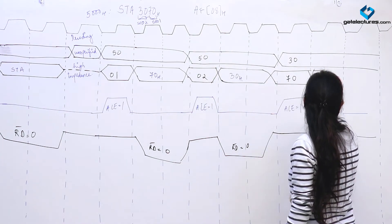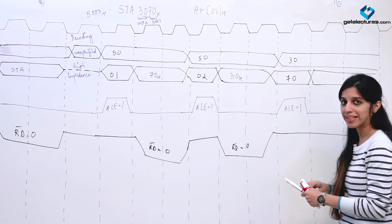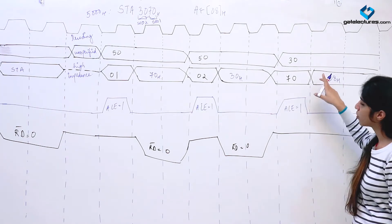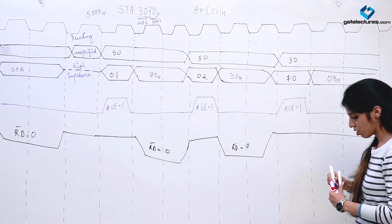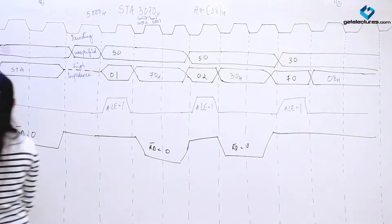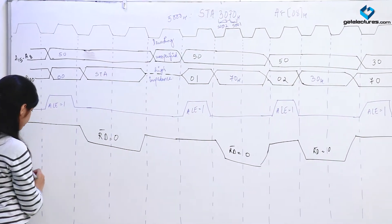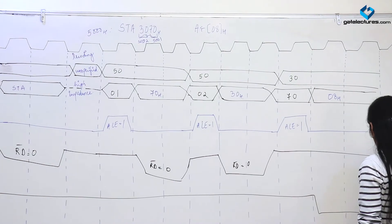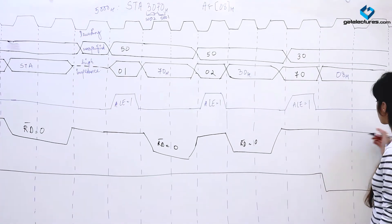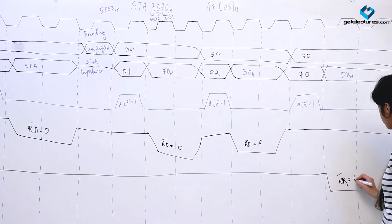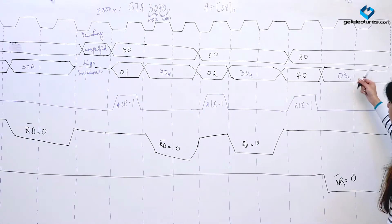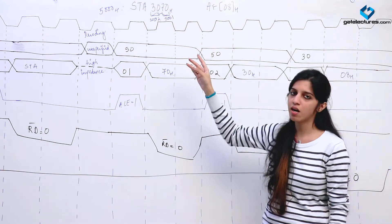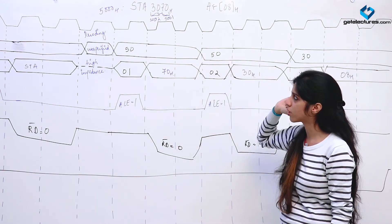When we reach location 3070, we wish to write the contents of the accumulator there. Suppose the contents of the accumulator were 08. We are going to place 08 on the data bus. These were the contents of the accumulator, now put on the data bus. To write these contents to this location, there is another line known as write bar. Since this is also an active low signal, for these two cycles I am going to make write bar 0. As soon as write bar goes 0, this data 08 is going to be written at location 3070. This is the timing diagram for storing accumulator contents at a particular memory location.